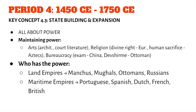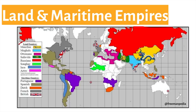So who was actually in power? We have two different groups: land empires, which literally means empires that covered large portions of land. The major players are the Manchus in China, the Mughals in India, the Ottomans in the Middle East, and the Russians in Russia. Then you have maritime empires, covering across the seas — these are the explorers and expansionists, clearly the Europeans: the Portuguese, Spanish, Dutch, French, and British.